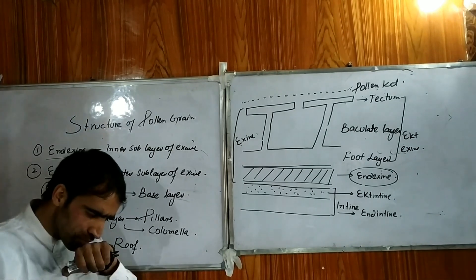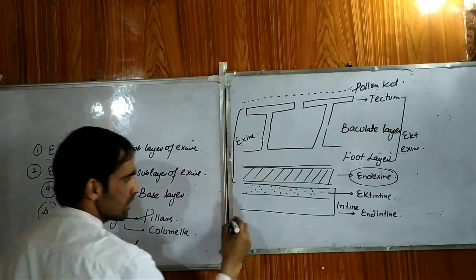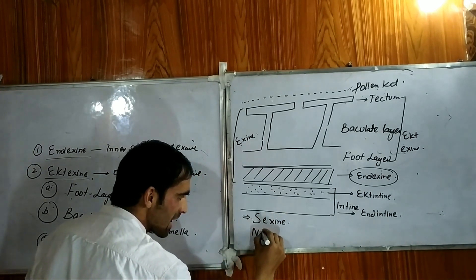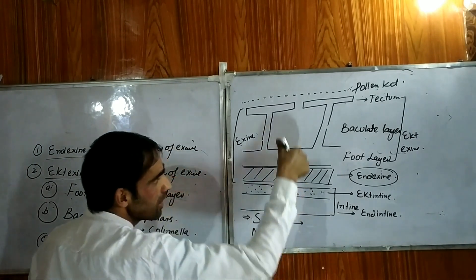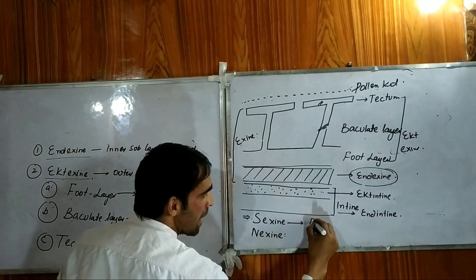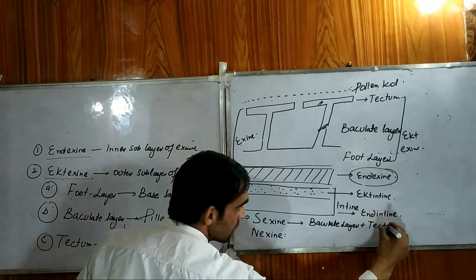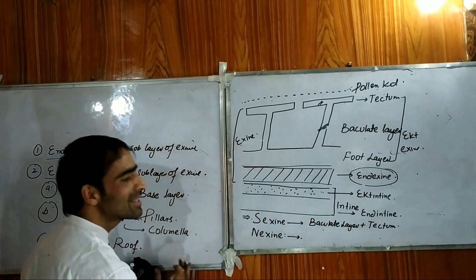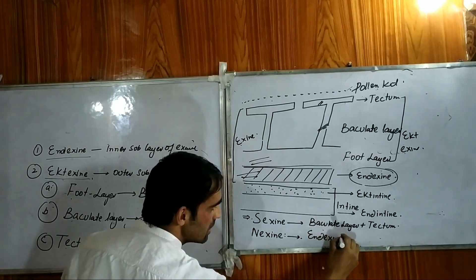This was the explanation of all those layers of exine. Let me tell you one last point. Sometimes you will be asked about the terms sexine and nexine. Sexine is the outer part of exine and includes two layers: the baculate layer plus the tectum. Nexine includes endexine plus the foot layer.